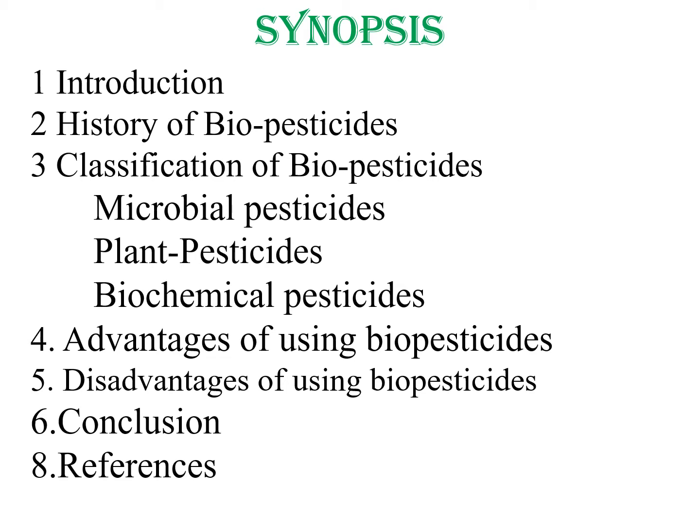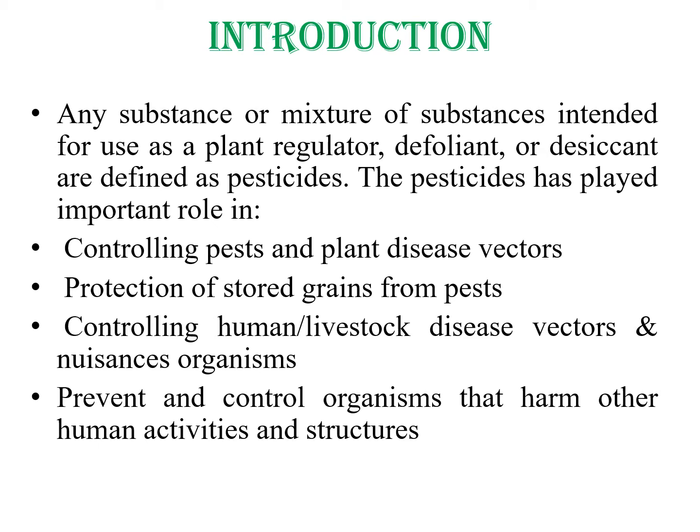First, introduction. Before we talk about biopesticides, let us first discuss pesticides. Pesticides are any substances or mixture of substances intended as a plant regulator, defoliant or desiccant. Pesticides play an important role in controlling pests and plant disease vectors, protection of stored grains from pests, controlling human disease vectors and nuisance organisms, and also prevent and control organisms that harm other human activities and structures.